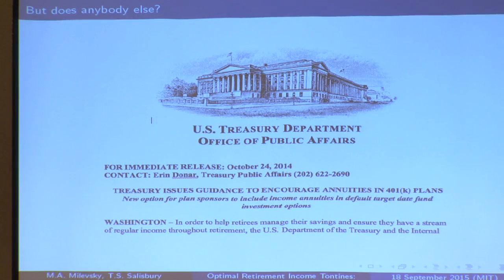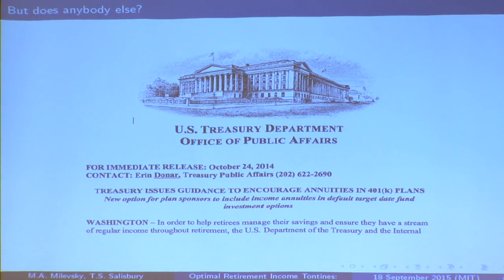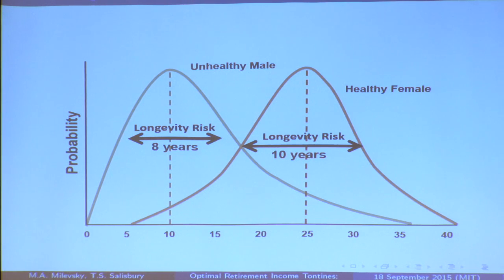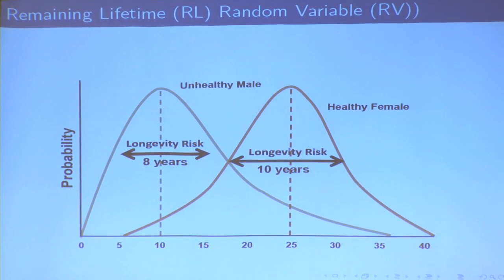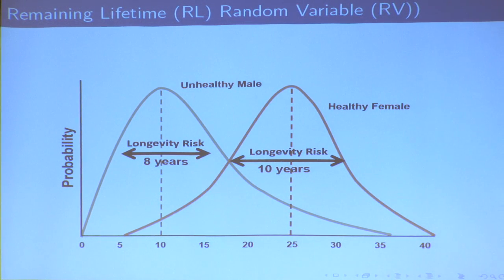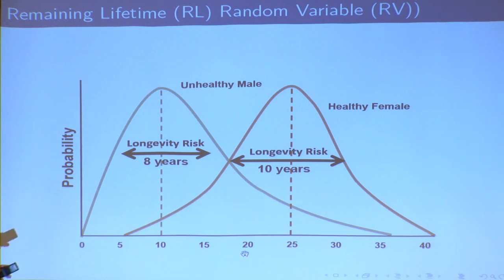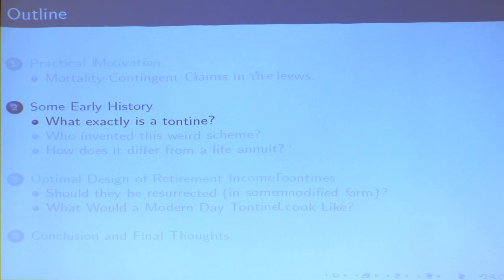Mortality contingent claims have been in the news. There's a lot of discussion in the public arena around encouraging people to annuitize. In fact, in October of last year, the Treasury Department issued guidance to encourage annuities in 401k plans. Generally speaking, when you're trying to explain why someone might want to buy a life annuity, you tell them that your remaining lifetime distribution is not bimodal — there is a mean. A healthy female at retirement can expect to live 25 years, with a standard deviation of about 10 years. The issue is the right-hand tail of the distribution — a low probability, high magnitude cost. How do we protect against it?